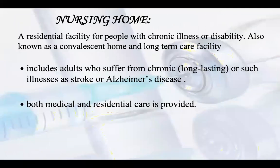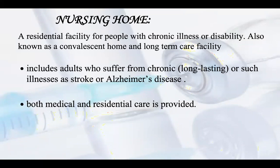A nursing home, by its earlier definition, is a residential facility for people with chronic illness or disability, also known as a convalescent home and long-term care facility. It includes adults who suffer from chronic, long-lasting illness such as stroke or Alzheimer's. Both medical and residential care is provided — they can provide drugs as well as other home-like facilities such as food, nutrition, change of clothes, and bathing — whatever a senior citizen or such a patient needs.